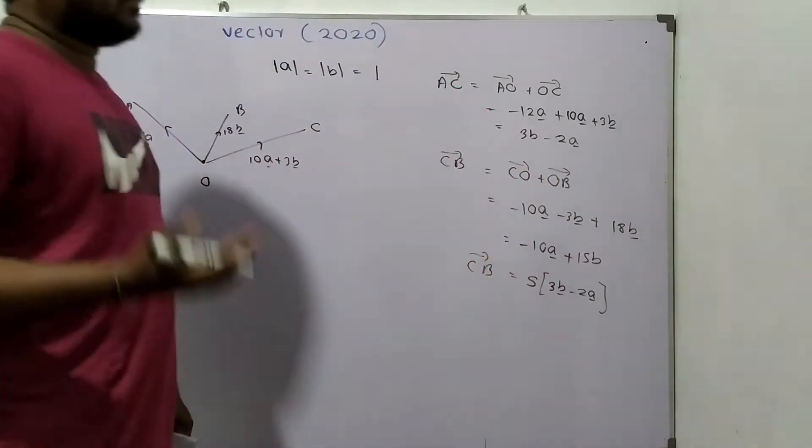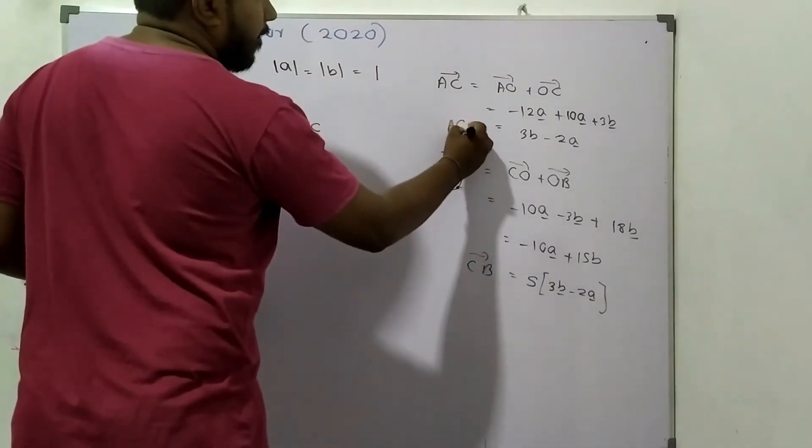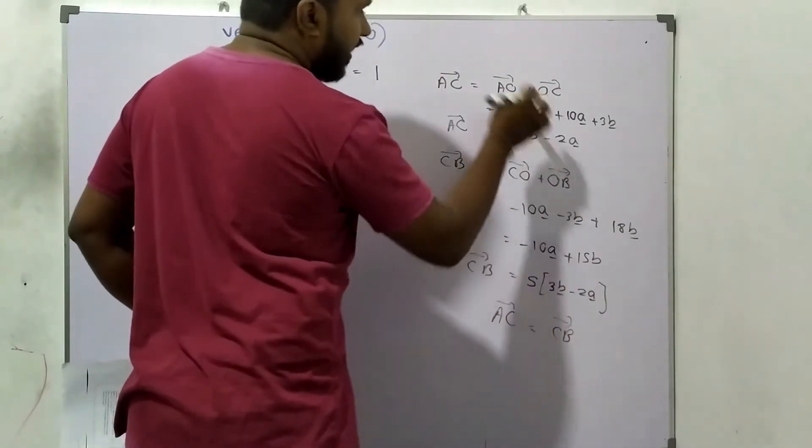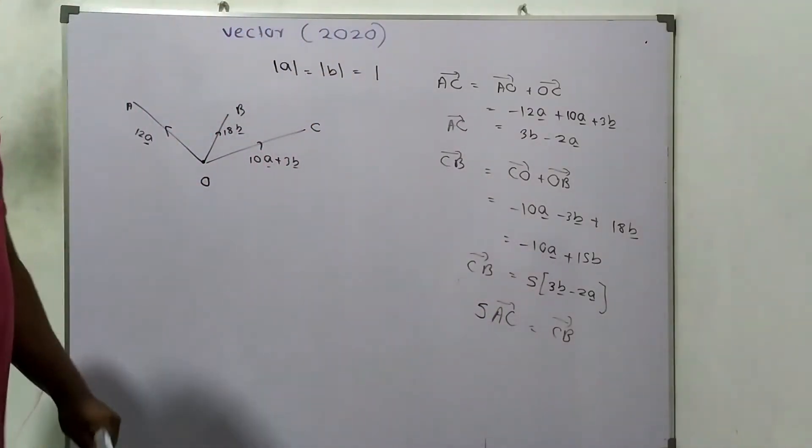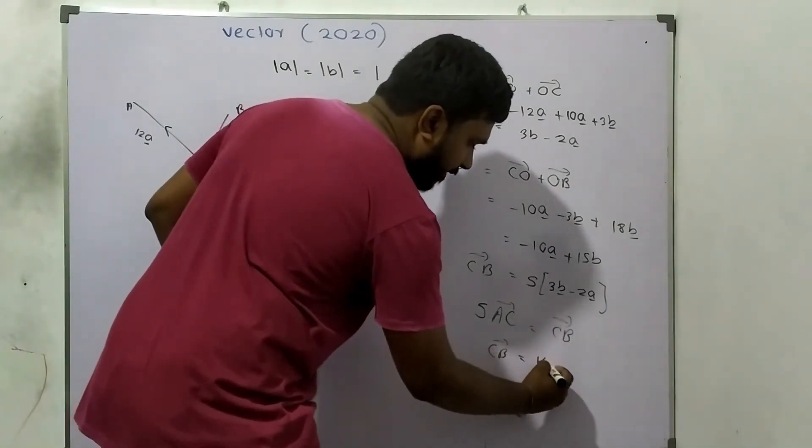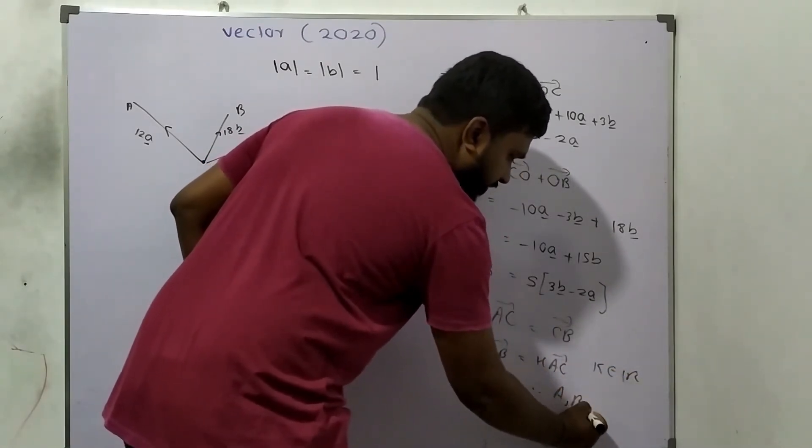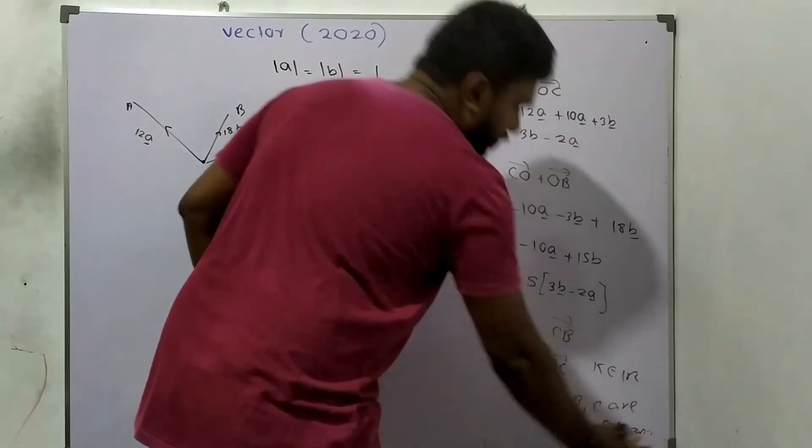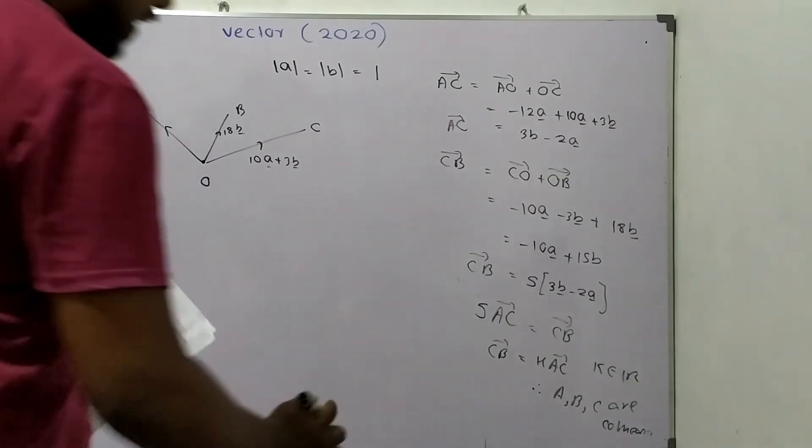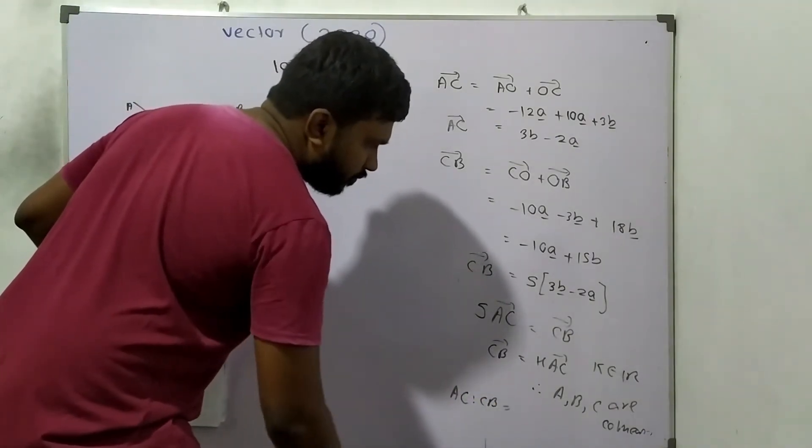Now you can see that AC and CB are connected because five times AC equals CB. So CB equals k times AC where k is a real number. Therefore A, B, C are collinear with the ratio AC to CB equal to one to five.